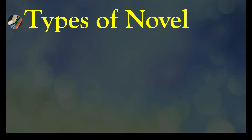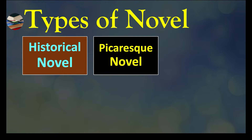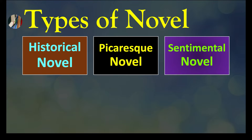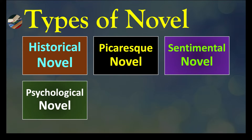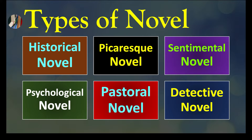Hello and welcome to a new topic. What are types of novel? The first type is historical novel, picaresque novel, sentimental novel, psychological novel, pastoral novel, and the last one is detective novel. These are some of the six most important types of novels. Let's discuss each one of them one by one.